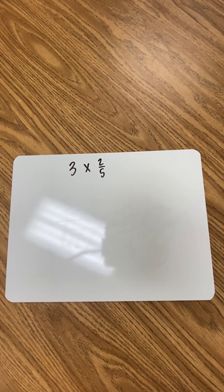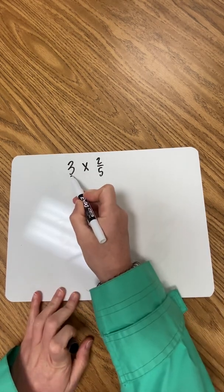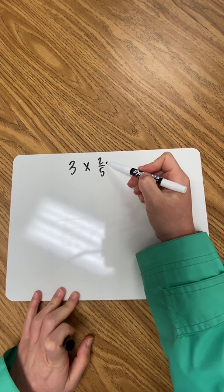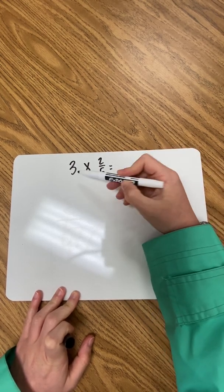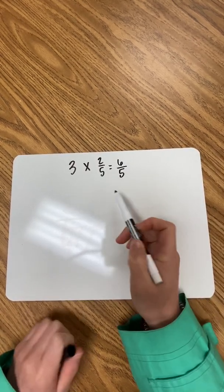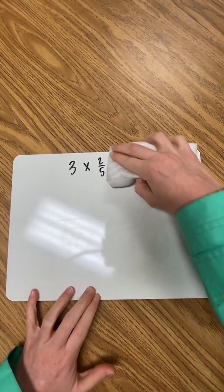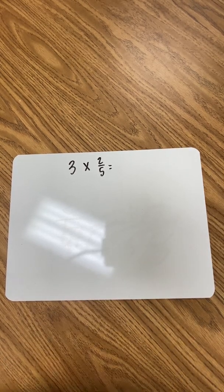Today we're going to talk about multiplying a whole number by a fraction. A lot of times we think this is such a simple process that we just teach kids procedurally to multiply the whole number by the numerator of the fraction — which is the correct procedure. They multiply three times two to get six, getting six-fifths as an answer in improper fraction form.